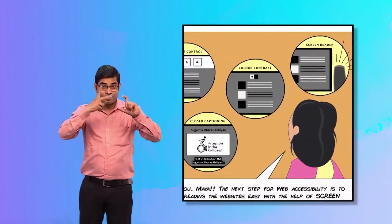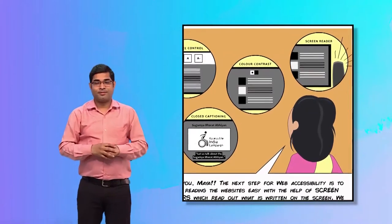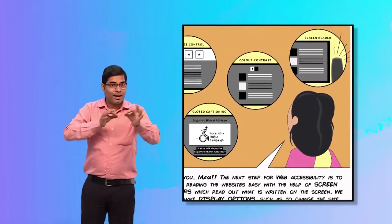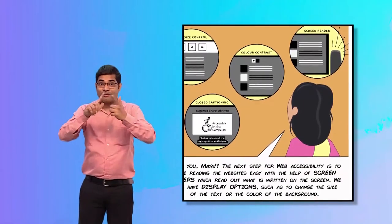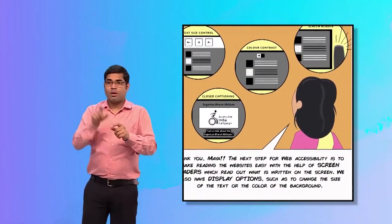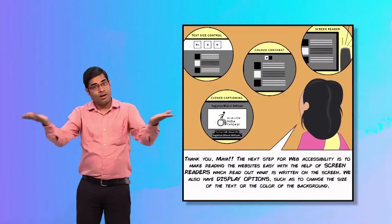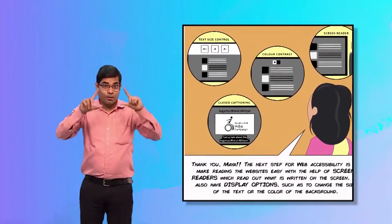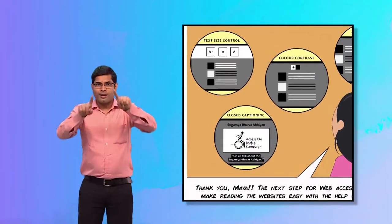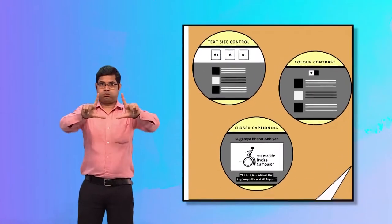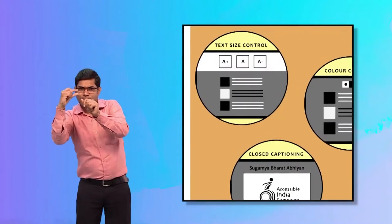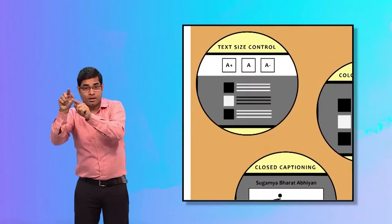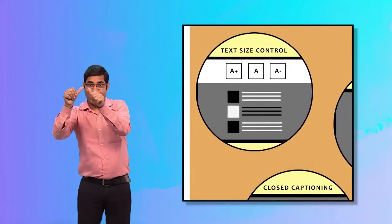In the third picture, Jyothi Ma'am continues explaining about the features that can be seen on a website that makes it accessible for everyone. The picture shows zoom-in windows on the features of font size control, shown by A+, A, and A- written on three closely placed buttons.